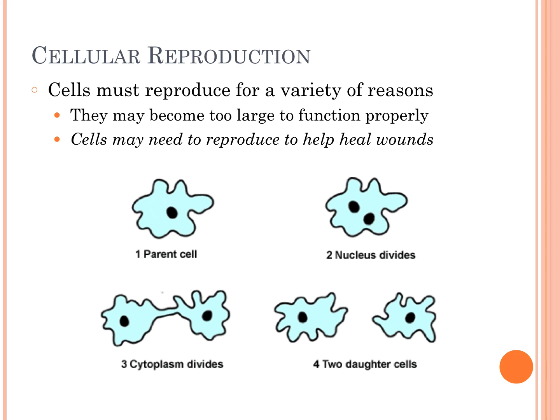Sometimes cells get too large to function — they have a certain number of organelles that can be used, and once they get too large it puts stress on those organelles, so that's when a cell would have to divide. Sometimes cells also need to reproduce to heal wounds. If you cut yourself, the cells near that wound start to divide rapidly so that your skin cells can cover the wound and protect what's underneath. The picture shows that you start with a parent cell, the two nuclei divide, then the cytoplasm divides, and you have two daughter cells identical to the first cell.